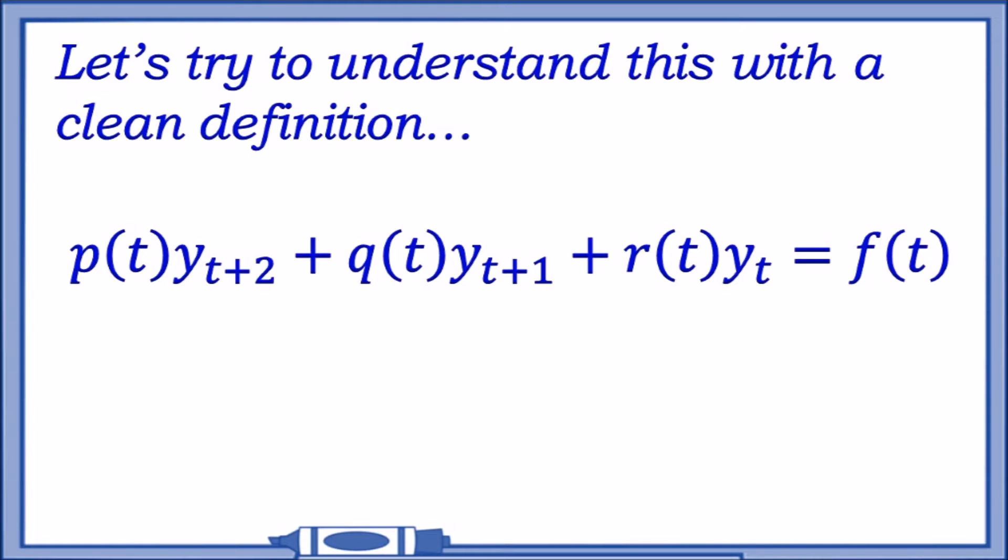First things first, let's try to understand what the heck is a second order difference equation and how we apply it and solve it. We have four key variables: p(t), q(t), r(t), and f(t). These are just functions in terms of t where p(t), q(t), and r(t) are going to be constants. This is going to be a linear example.